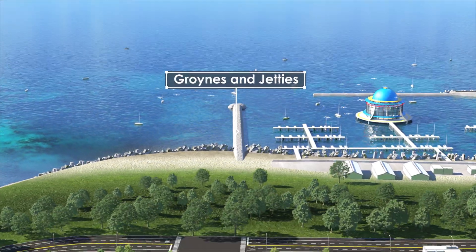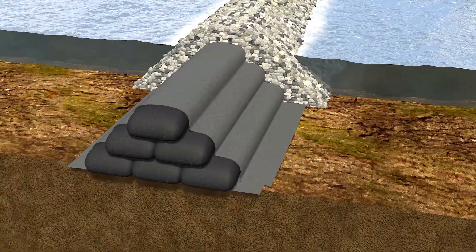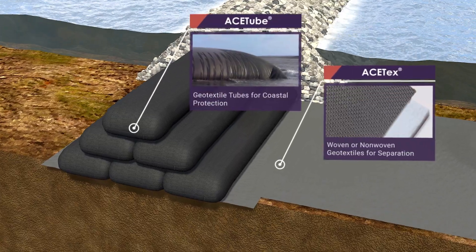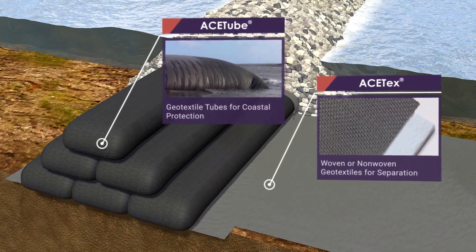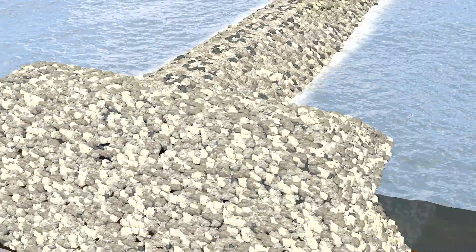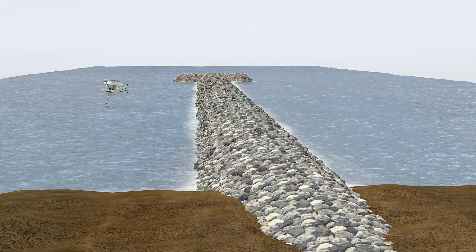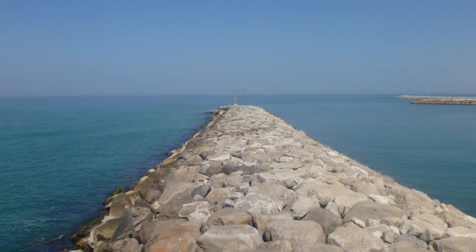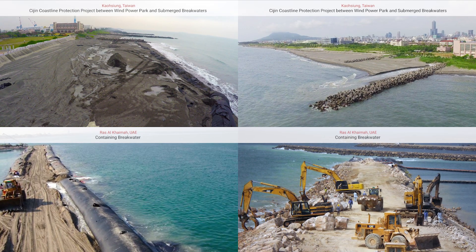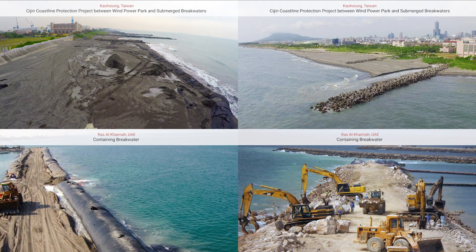Groins and Jetties: Groins built with ACE tube geotextile tubes can be constructed economically in a short period of time compared with traditional concrete structures. It can also decrease breakages or loss of rock fill due to differential settlement, providing an economical, long-lasting and eco-friendly beach protection solution.